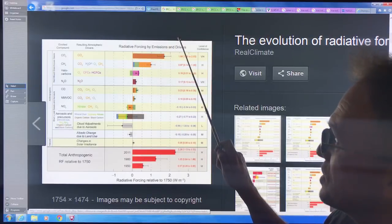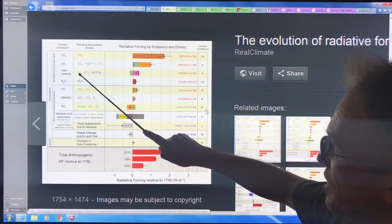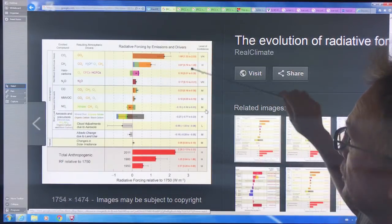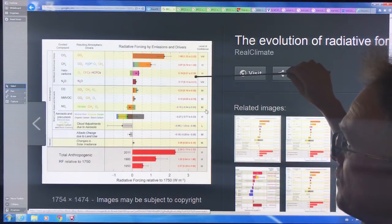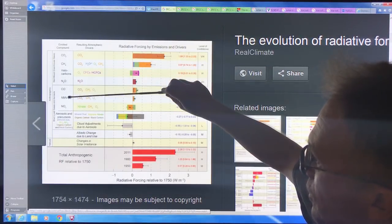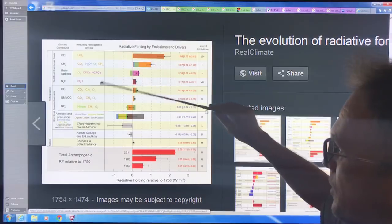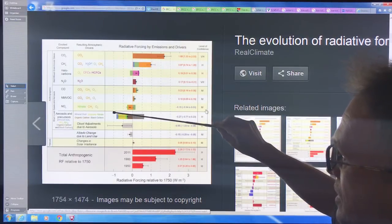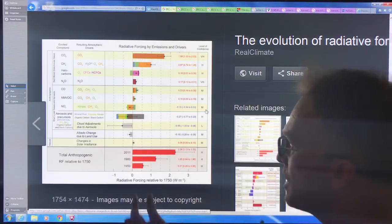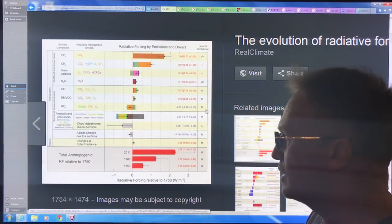This is showing you the radiative forcing by emissions and drivers. Here we have the greenhouse gases: CO2, methane, CFCs, HCFCs, nitrous oxide, all contributing to radiative forcing with levels of confidence. Then we have some other gases: CO, nonmethane volatile organic compounds, NOx, then we have the aerosol effect, cloud adjustments, albedo change due to land use.